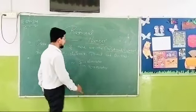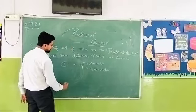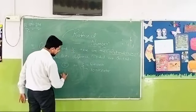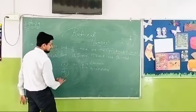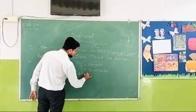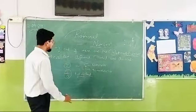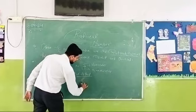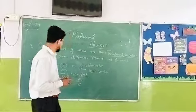Rational number. But the condition is that the denominator cannot be zero. If I write like 1 upon 0, so this is not defined. It is not a rational number. All the numbers that can be written in the form of p upon q, like p is numerator and q is denominator, are all rational numbers.